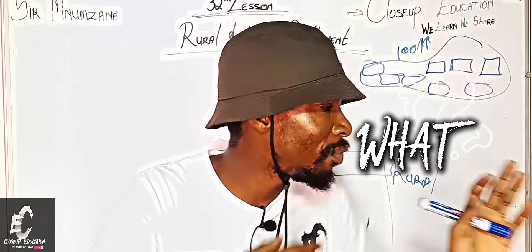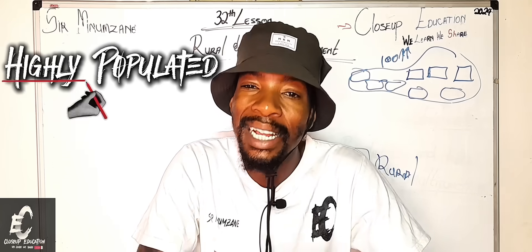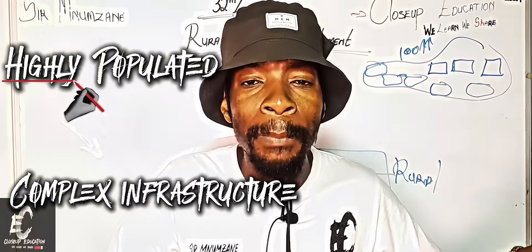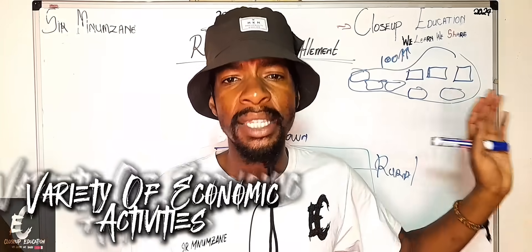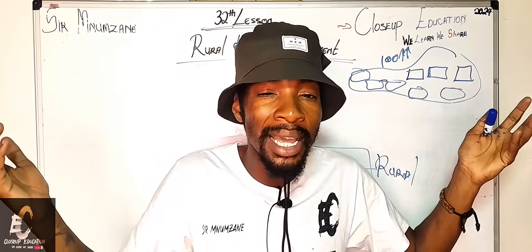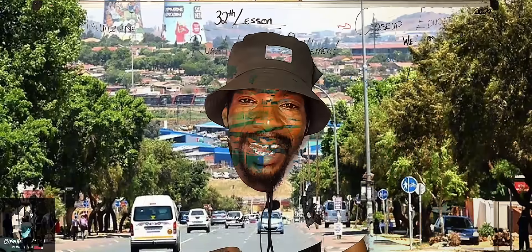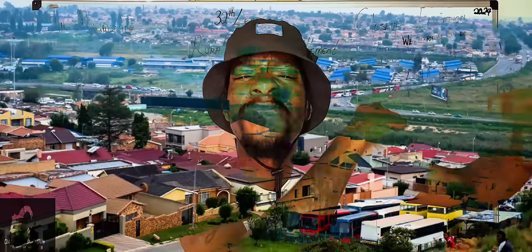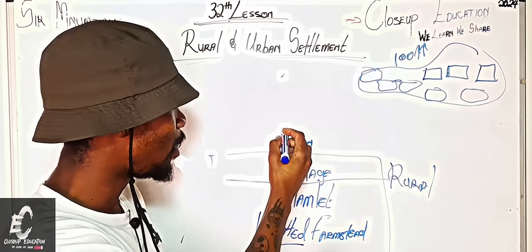Okay guys, what is the definition of a town? Maybe you can say it is a more populated settlement with complex buildings and a variety of economic activities. You definitely heard what I said. I said it is a more populated with complex buildings, which has a variety of economic activities. That is a town, guys. Now we have a town.